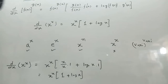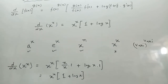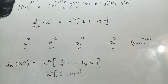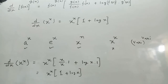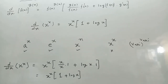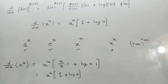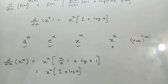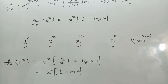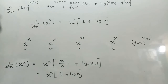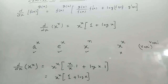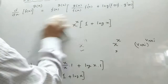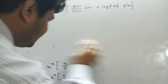This is the derivative of x^x. When both base and exponent are variable, we use this shortcut formula. If you use the traditional method, roughly seven to eight steps will be needed, but with this shortcut you can solve it in one step.